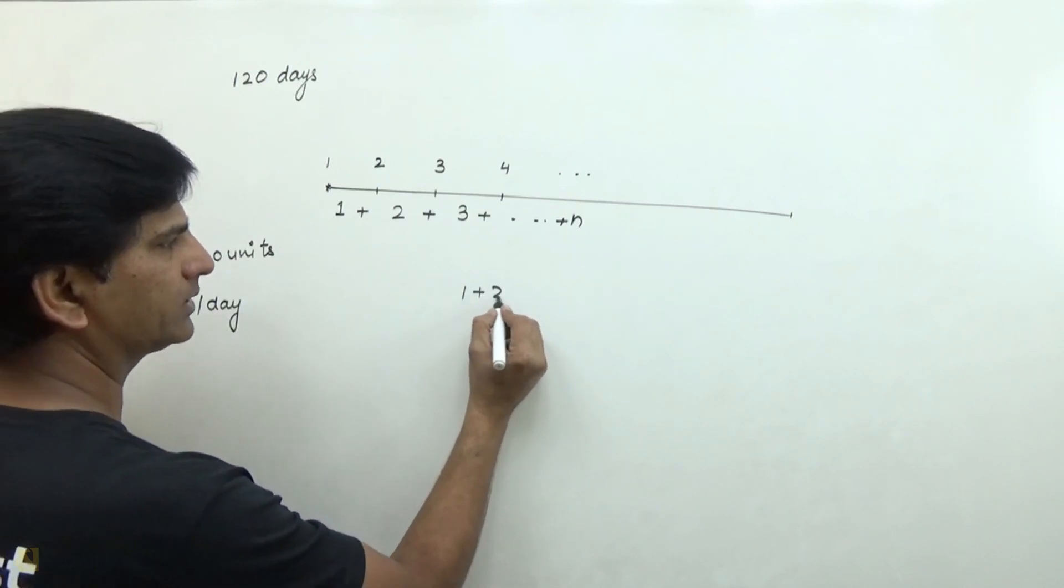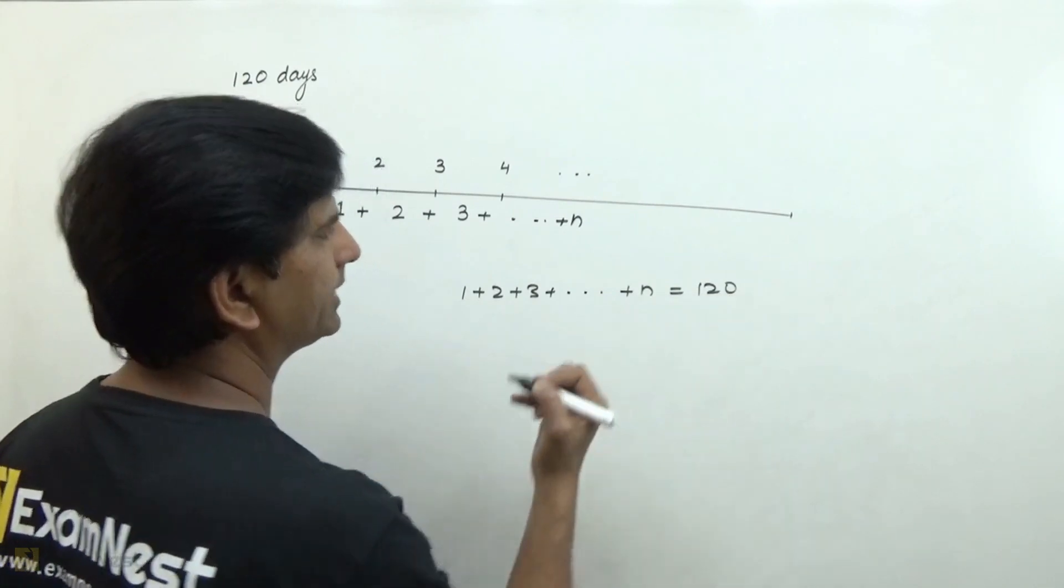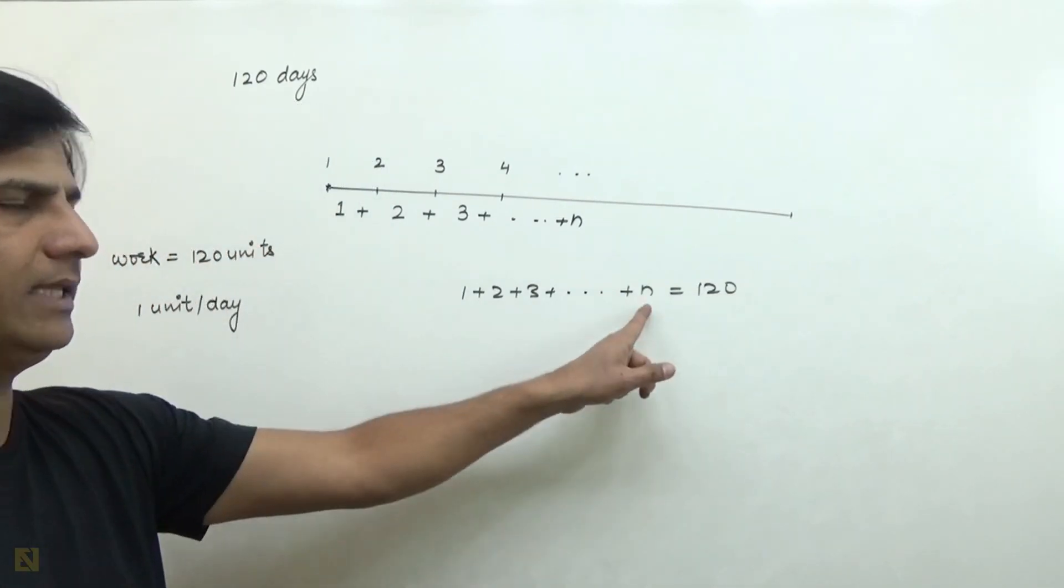So when 1 plus 2 plus 3 and so on up to n equals 120, then we can find the value of n.